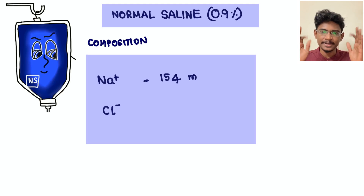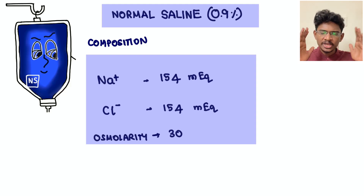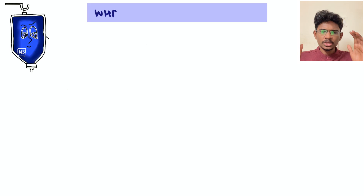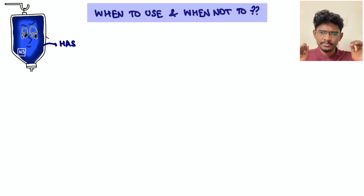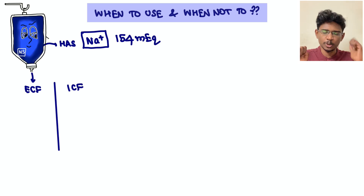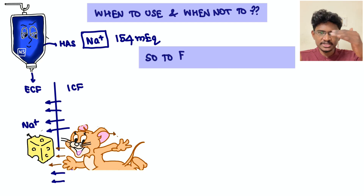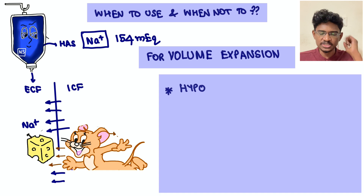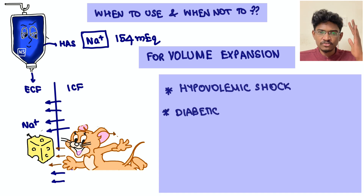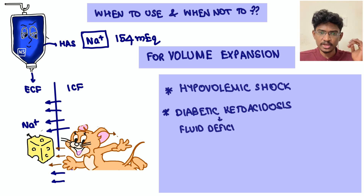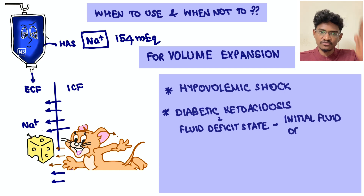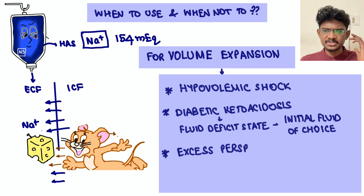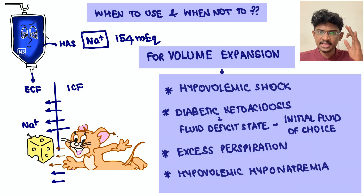The next isotonic fluid is Normal Saline 0.9%, which contains 154 mEq/L each of sodium and chloride. Like RL, its sodium acts as osmoles to drag water from ICF and expand ECF volume. Uses include severe hypovolemia, diabetic ketoacidosis where large fluid volumes are needed, excessive perspiration, and hypovolemic hyponatremia.